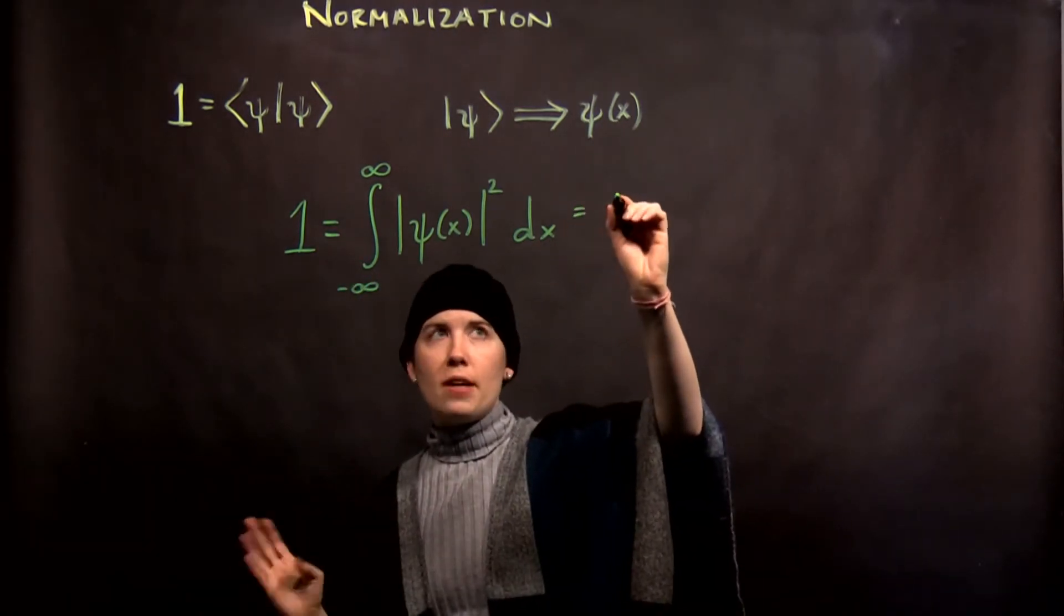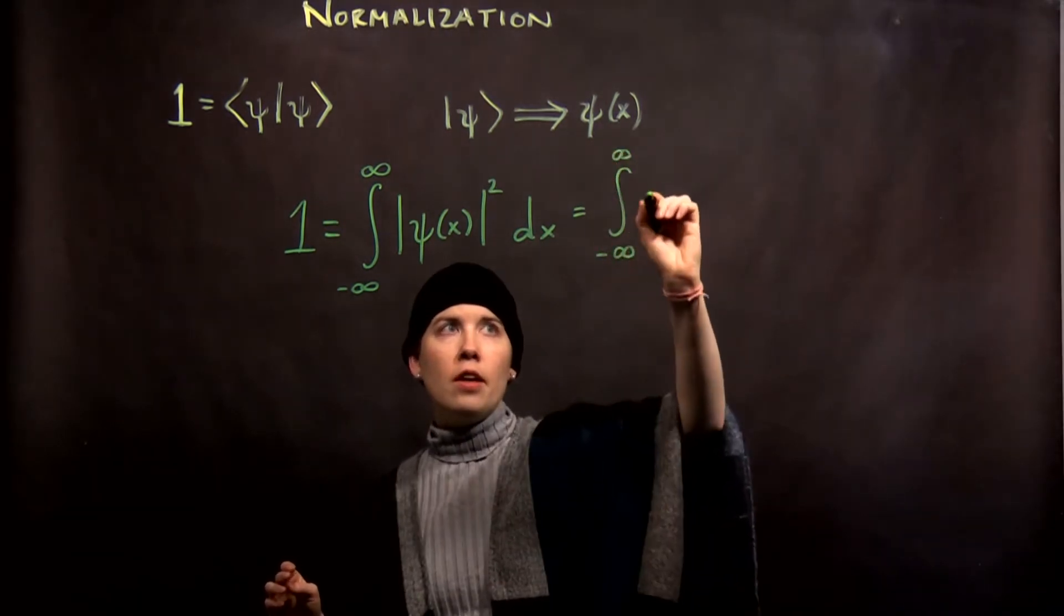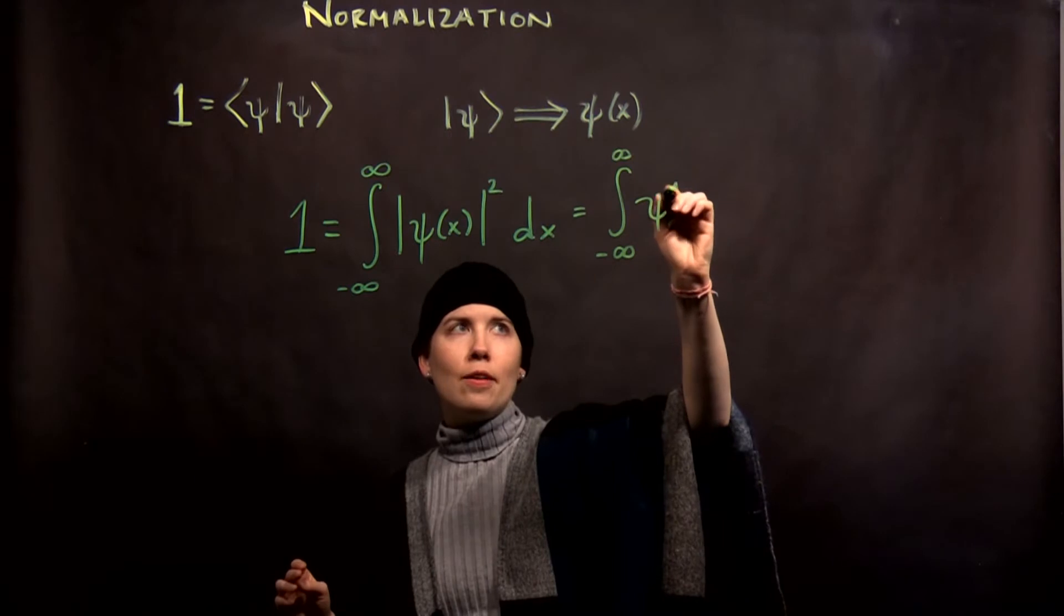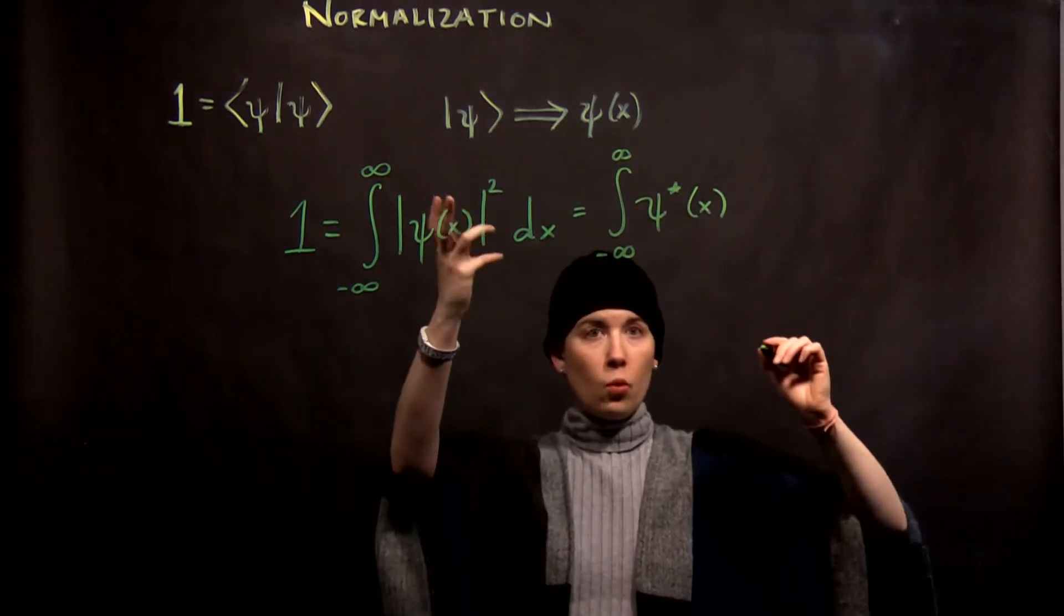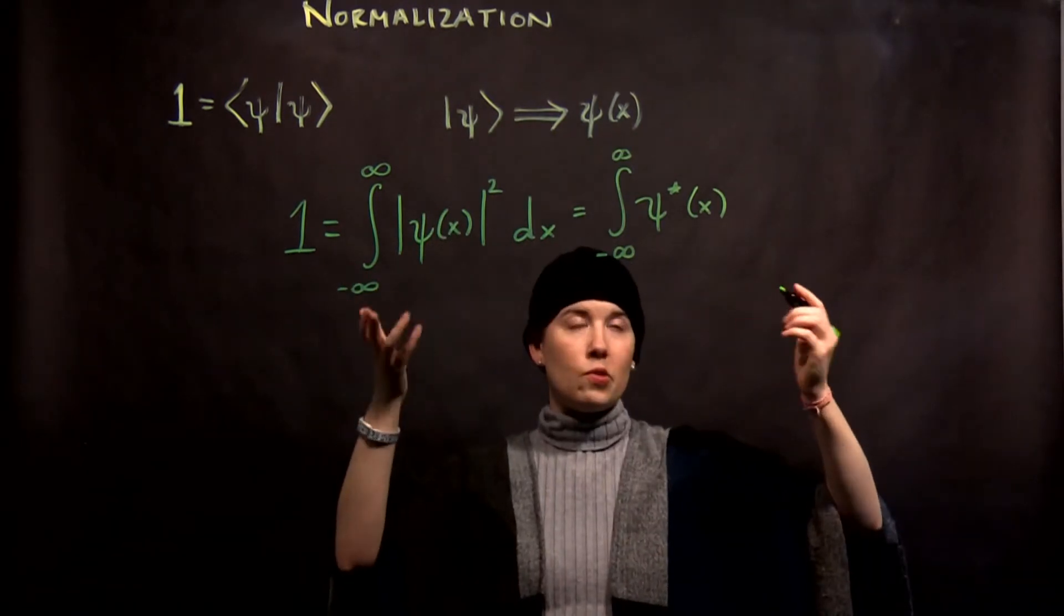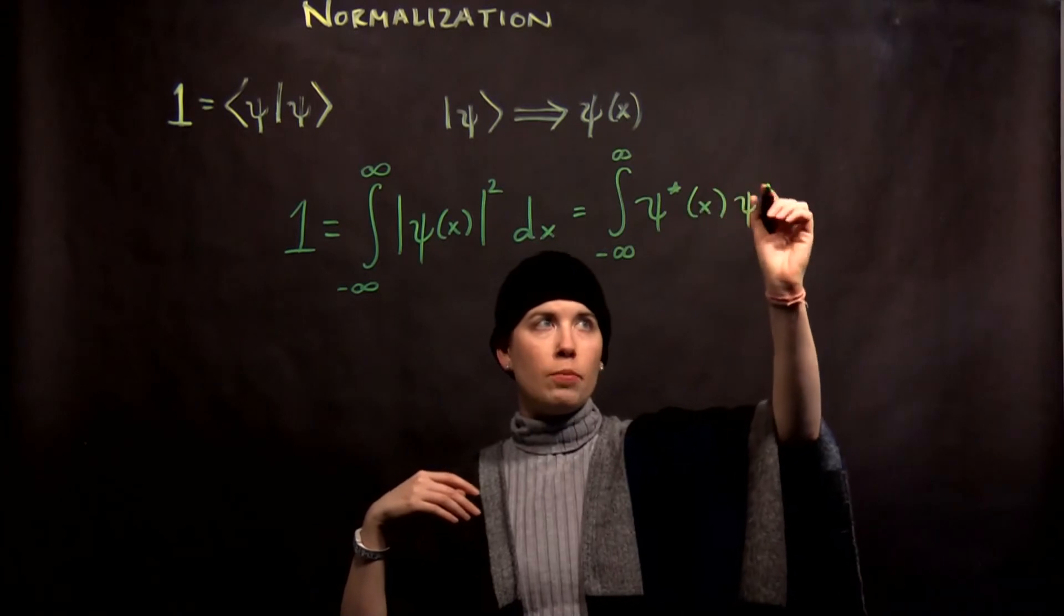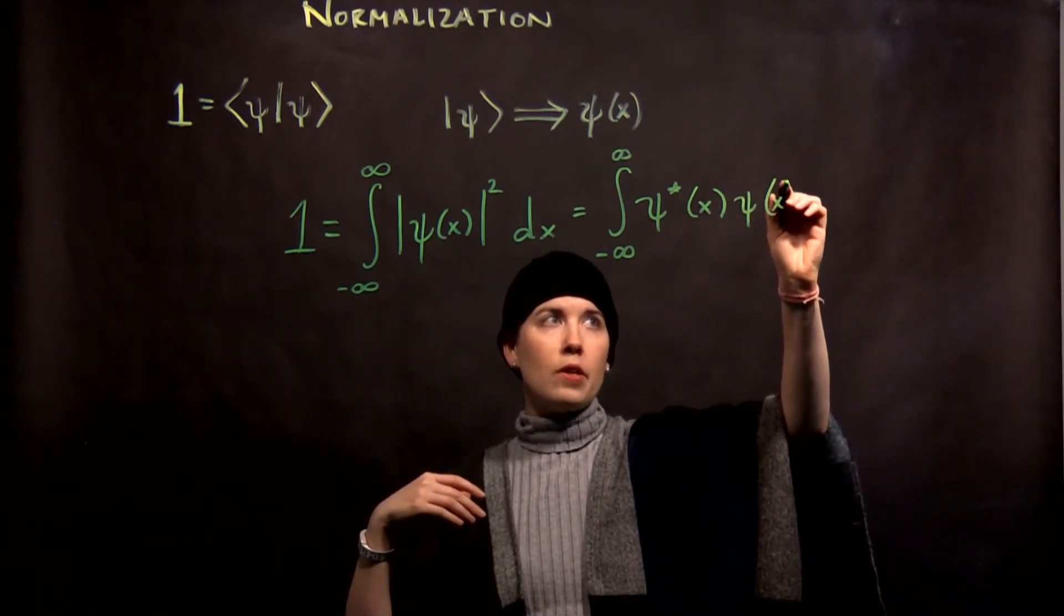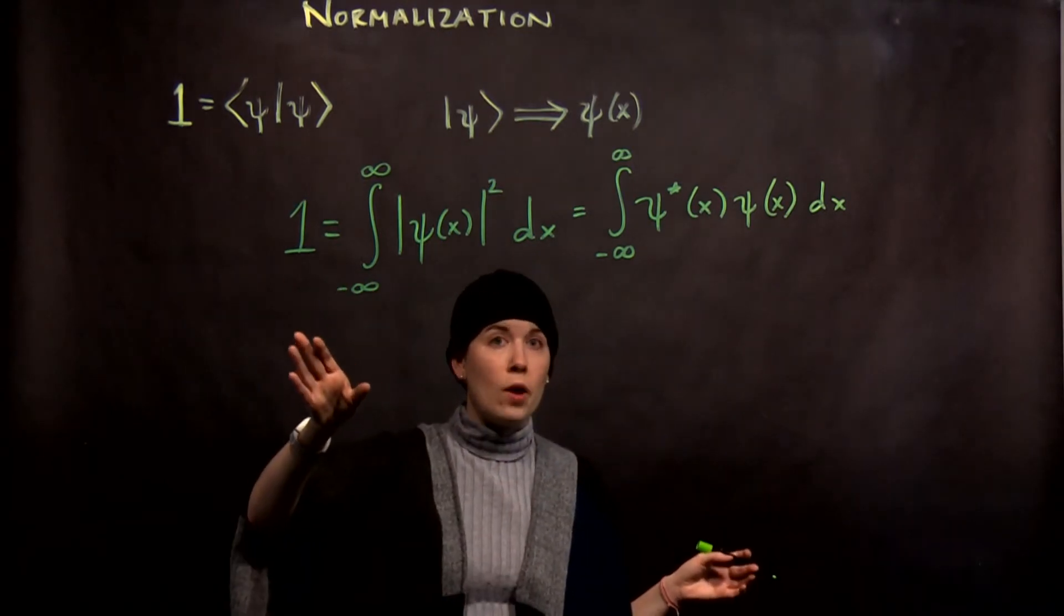And in fact, we can write that just slightly differently to communicate the fact that ψ might be complex. So before we always had that the magnitude squared of say z is z* z. Same now. That we have our wave function complex conjugated times itself dx. So you integrate that over all space, and you need to get to 1.